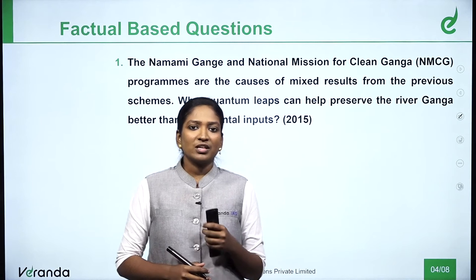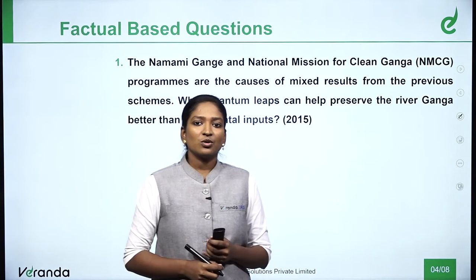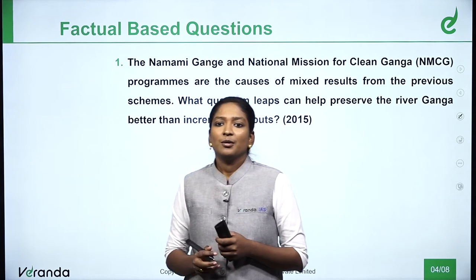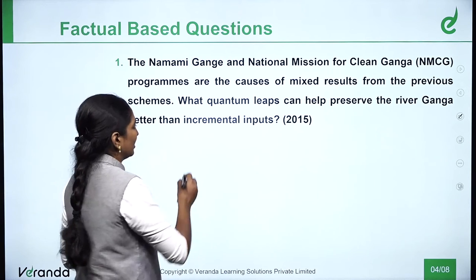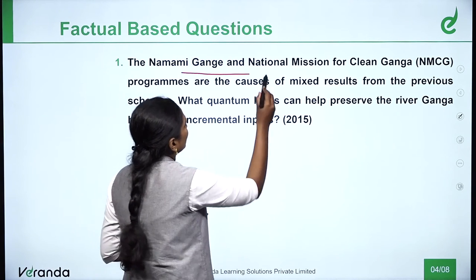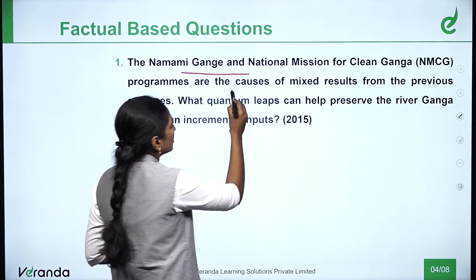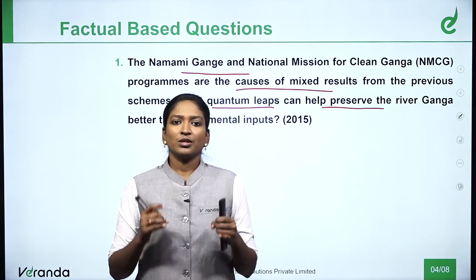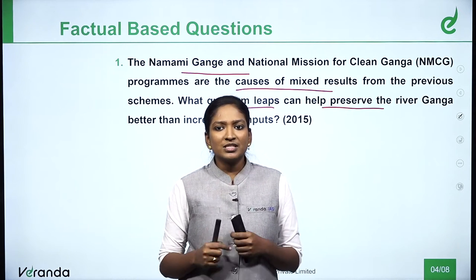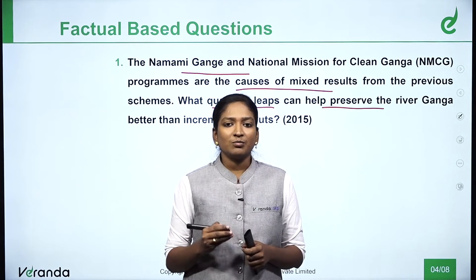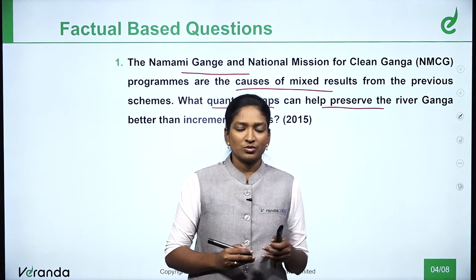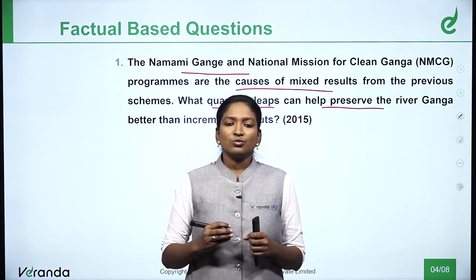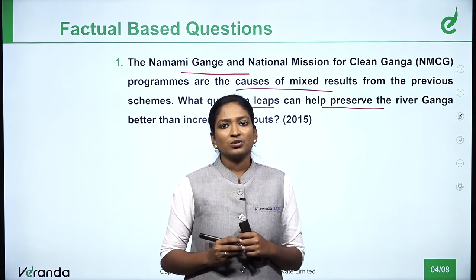The first question is about the National Ganga Mission for a clean Ganga. The question asks about the causes of mixed results from the previous scheme and what quantum leaps can help preserve river Ganga better than incremental inputs. We need to note the main points about the National Ganga Mission, the causes of the mixed results, and the quantum leaps to preserve the river. This scheme was implemented in 1985, then in 1993, and then again in June 2014, so you need to know all the basic concepts about the mission.